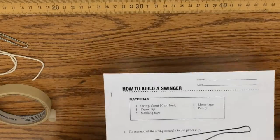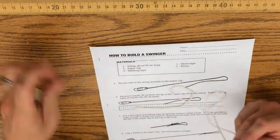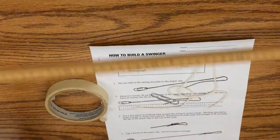Alright, we're going to construct a FOSS Pendulum. You'll need the worksheet, a string about 50 cm long, a paper clip, masking tape, a meter stick, and a penny.